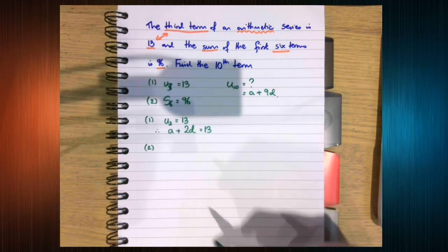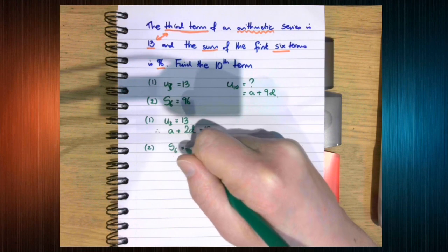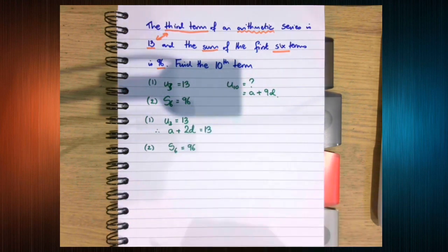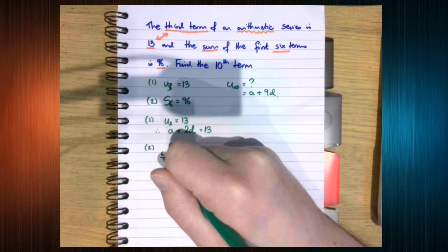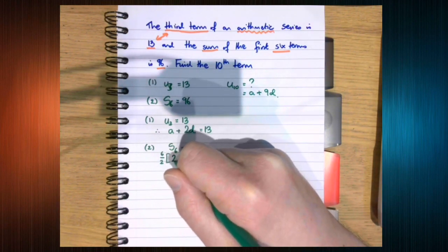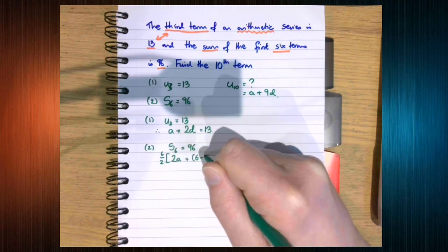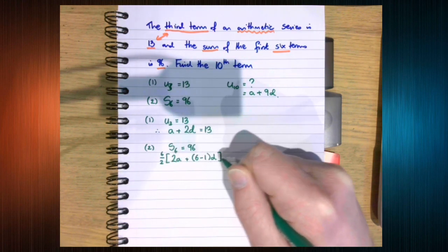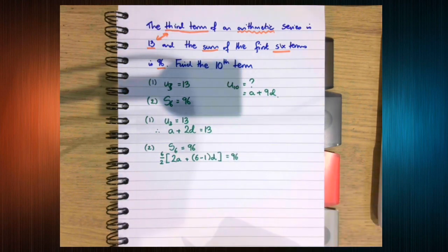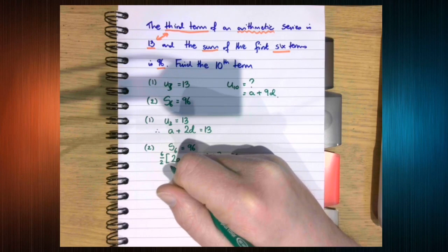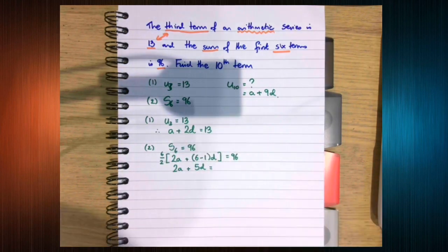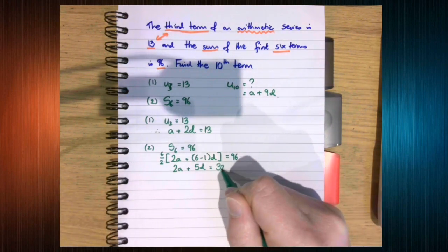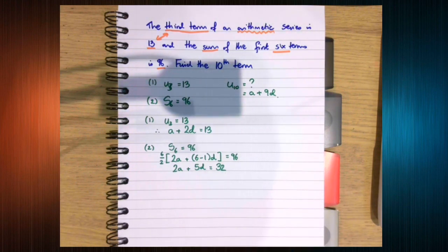Equation 2, we know that S6, because the sum of the first six terms is 96. So we know that n over 2, 2a plus n minus 1 d is 96. So this is 3, so dividing 96 by 3 we get 32.